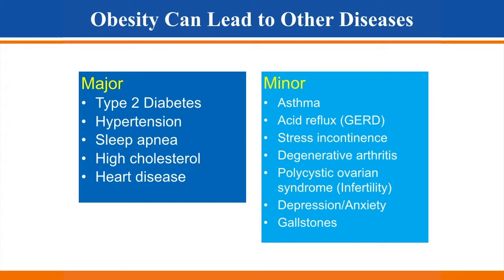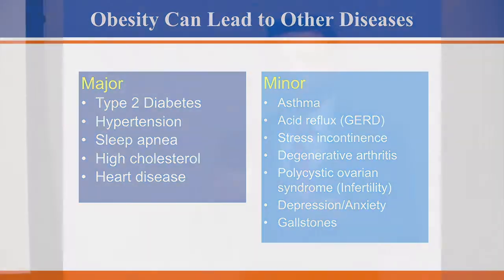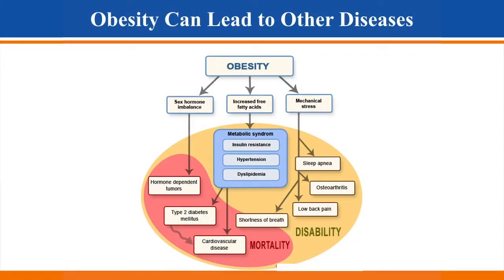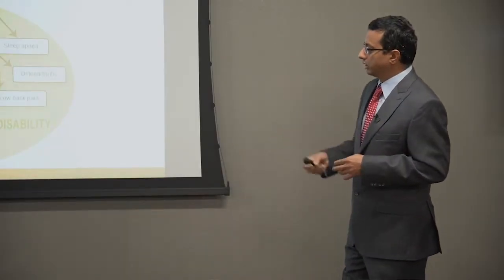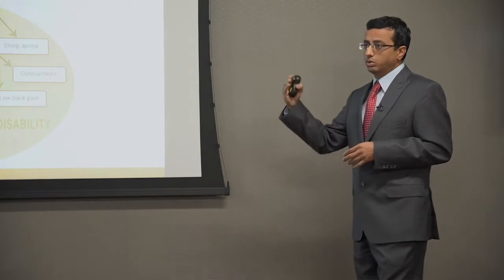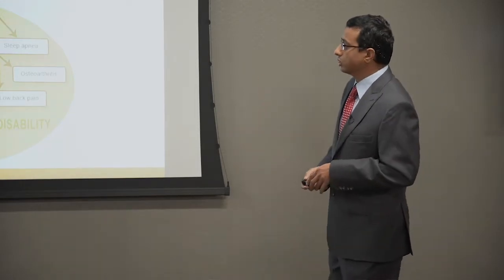When we have a weight issue or obesity, it doesn't come alone — it brings a lot of other medical problems. In fact, more than 30 medical problems can happen because of weight issues, like diabetes, hypertension, high cholesterol, sleep apnea, acid reflux, and incontinence. Some of these issues cause disability, and some are deadly — like diabetes, shortness of breath due to COPD or sleep apnea, heart disease, and certain cancers that are also caused by obesity.